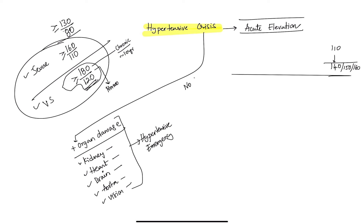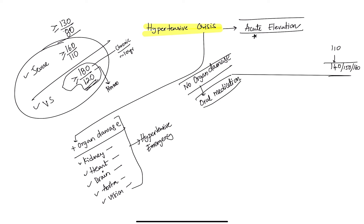If there is no organ damage — just an acute elevation of BP — it may be because the patient did not take medication, fell ill, or was in a stressful situation, or the drug has developed resistance requiring dose titration. In those cases you only see an acute elevation of BP with no organ damage. You can treat the patient with oral medication, doubling the existing dose or adding a new drug. This falls under resistant hypertension.